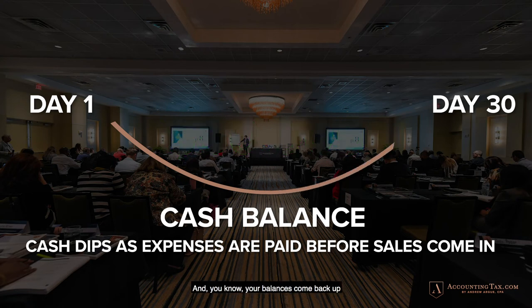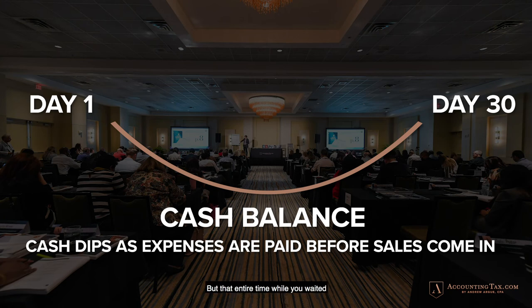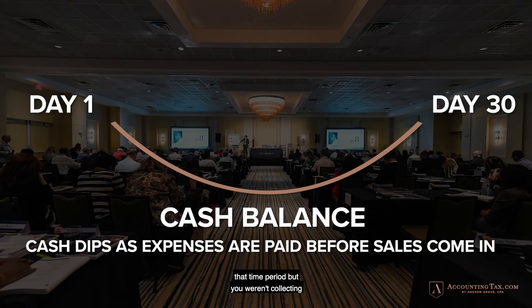Your balances come back up to a more normal amount. So that typically is what happens. After 30 days or so, your expenses and your cash have met. But that entire time while you waited, you really had less cash than you should, because you were earning that revenue all along that time period, but you weren't collecting any of it in cash.